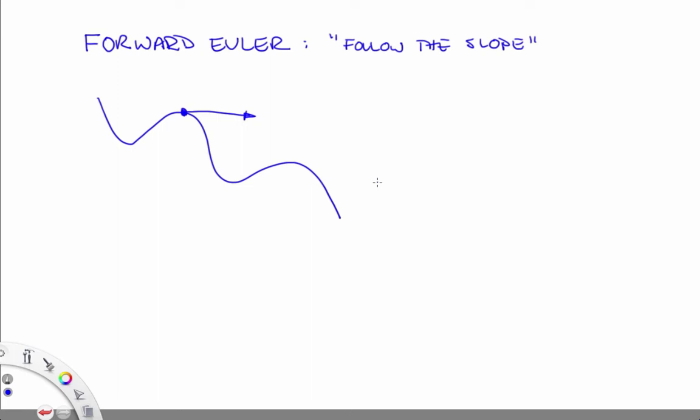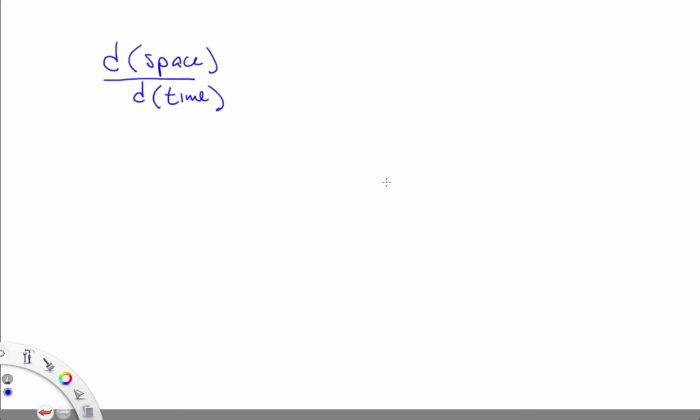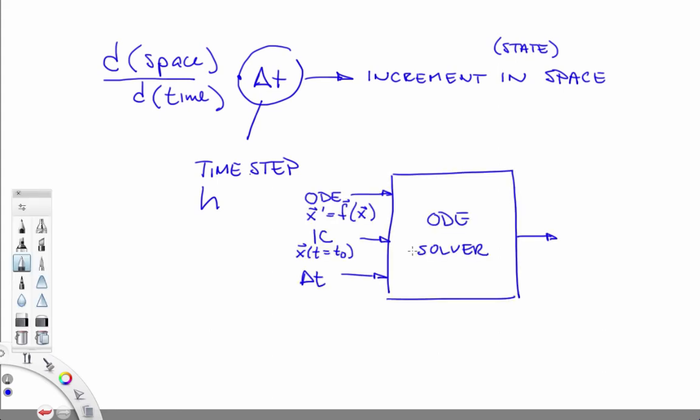What does it mean mathematically to roll along the derivative vector? A derivative vector is d space d time. Rolling along a derivative vector for some delta t is equivalent to multiplying d space d time by delta t, which gives you an incremental change in space, which is exactly what we wanted. We wanted to see how far in state space we move on a particular increment in time. That delta t, the time step, which I will sometimes call h, just because it's easier to write, is actually a third input to an ODE solver.